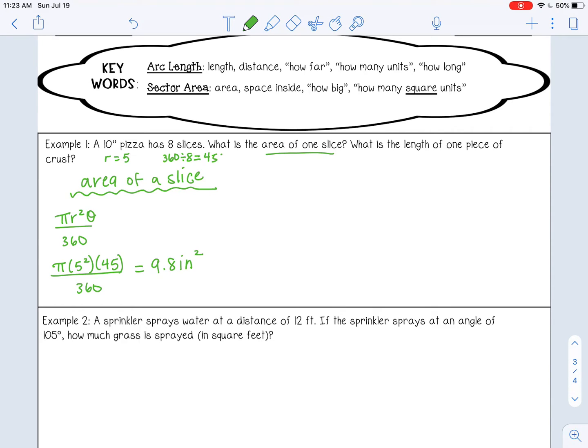And then let's find the length of crust. So 2πr times θ over 360. We know our r and our θ from the last example. So I'm just going to substitute those into my arc length formula. And it's arc length because I asked for the length. And that gives you about 3.9 inches.